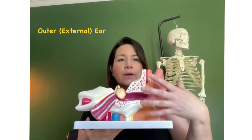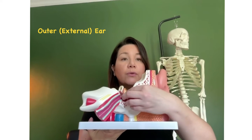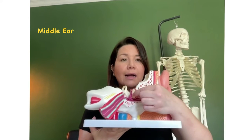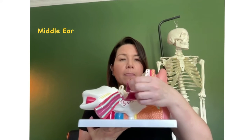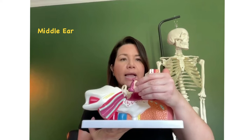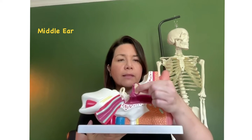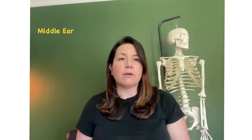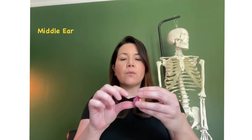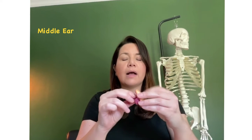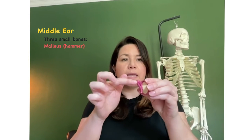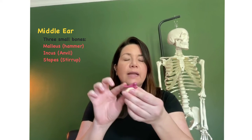So that's the outer ear. Now we move to the middle ear. The middle ear is behind the tympanic membrane — behind the eardrum. There are three little bones that make up the middle ear. In the middle ear, we have the malleus, the incus, and the stapes.